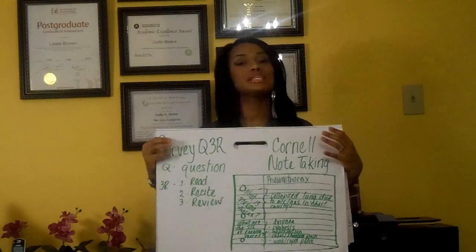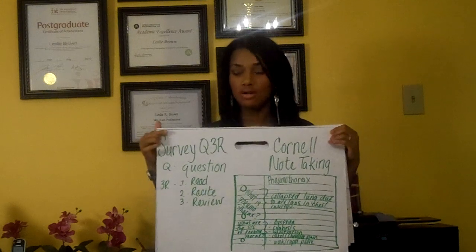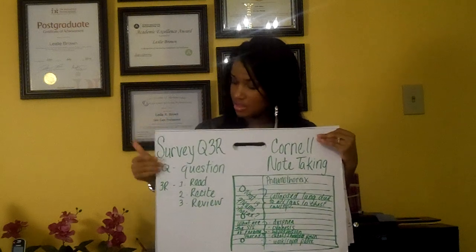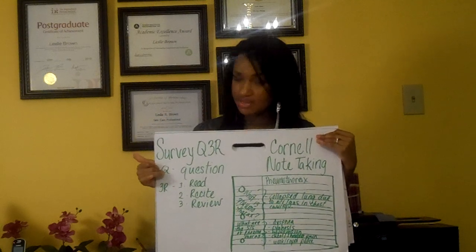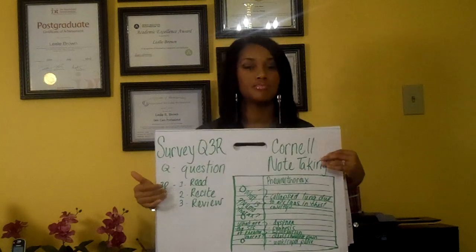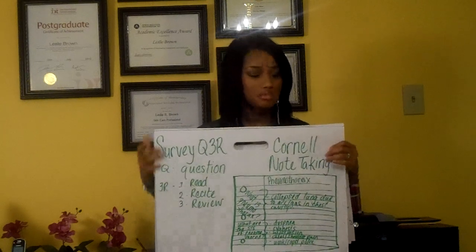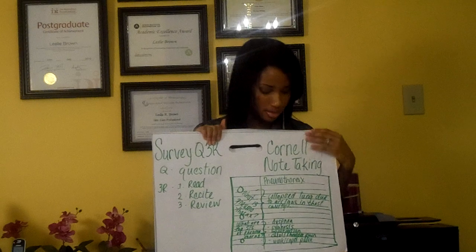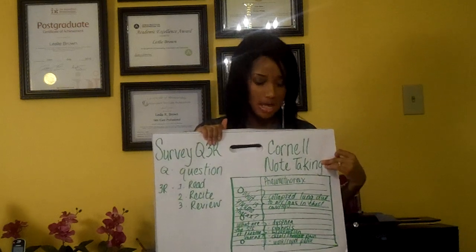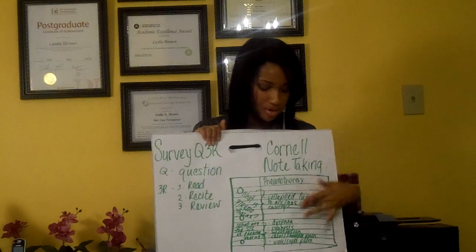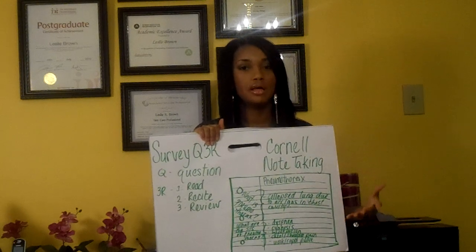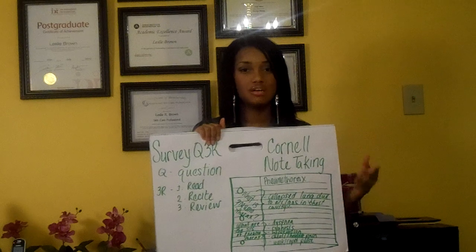I use a system called Survey Q3R. The Q stands for Question, and the three R's stand for Read, Recite, and Review. I use this in conjunction with the Cornell Note-Taking Strategy. This is a way of creating your notes that's very easy for reviewing and easy for testing yourself.